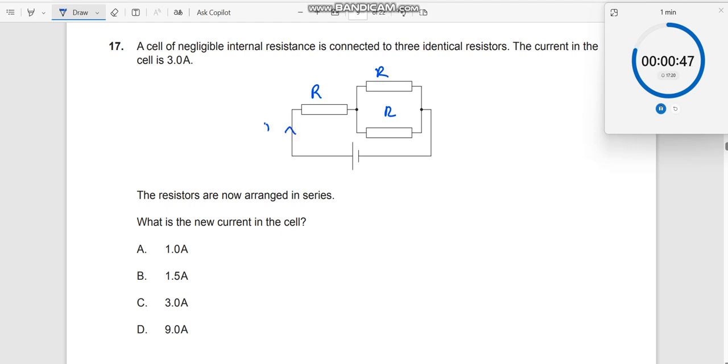Current is given. And resistors are now arranged in series, what is the new current in the cell? When you get questions like this, what you need to ask is that current is given, but resistance is not known, voltage is not known. So one of them should be known to us.